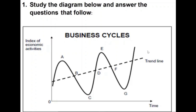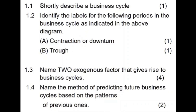This is the trend line — we are ending up at a higher point with an upward trend. Even though we've had some downs, we always end up at a higher point because the population is growing, so there will always be an increase in economic activity over the long term. A business cycle moves either from peak to peak or trough to trough, because we need to move through all four periods.